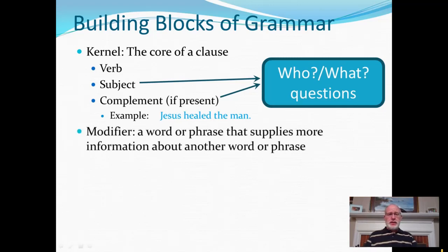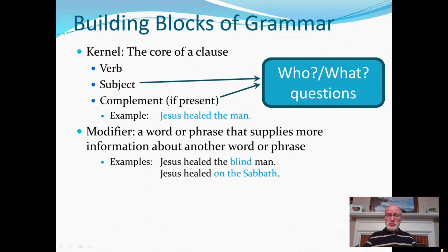All right, moving on here to another key building block of grammar is the idea of a modifier. A modifier is a word or sometimes a whole phrase that supplies more information about some other word or phrase in the sentence. A modifier expands a smaller idea into something larger with additional information. An example of a modifier would be Jesus healed the blind man. You see the word blind in blue. That's giving me more information about man. Jesus healed on the Sabbath. That's a modifier telling me when Jesus did the healing. So there are all different kinds of modifiers, but the key idea here is that a modifier is a word or phrase that gives us more information about another word or phrase.